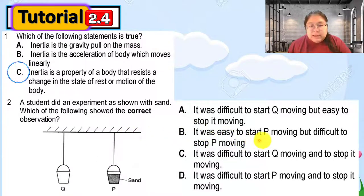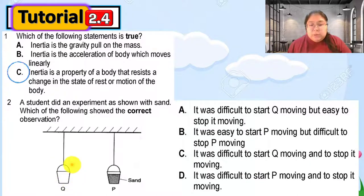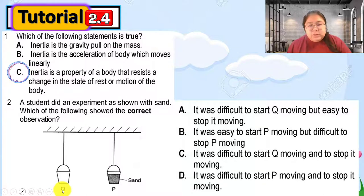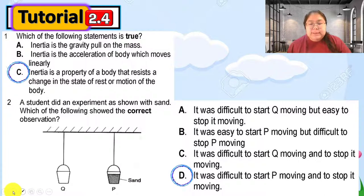For option B: it was easy to start P moving — but P is not easy to start because its mass is higher, meaning its inertia is high and it resists change in motion, so B is wrong. For option C: it was difficult to start Q and stop Q — but Q is empty so it has less mass and less inertia, meaning it should be easy to move and stop, so C is also wrong. Option D: it was difficult to start P and difficult to stop P — this is exactly the concept of inertia. Bigger mass means bigger inertia, so the answer is D.